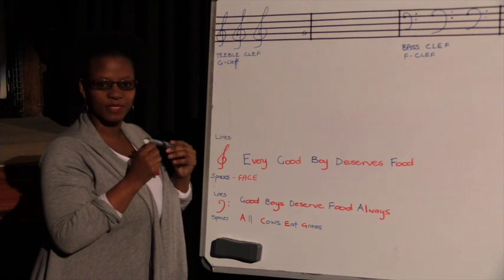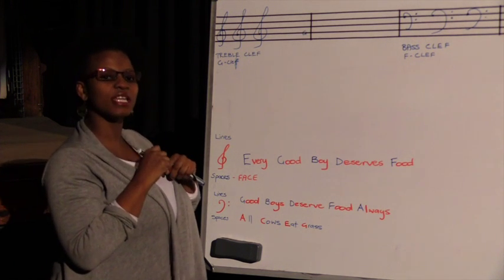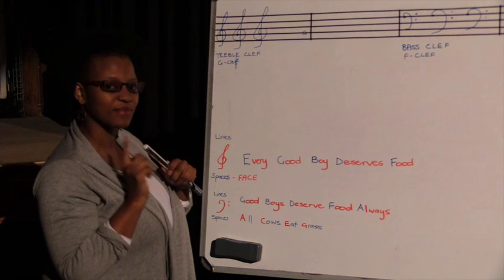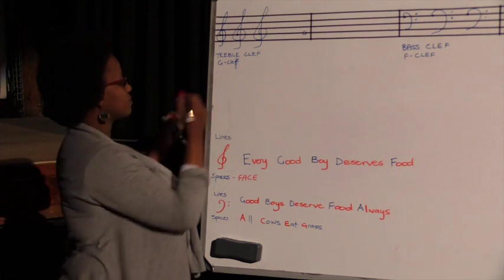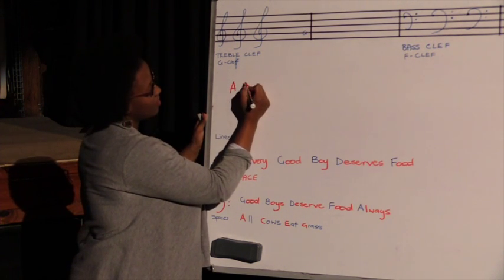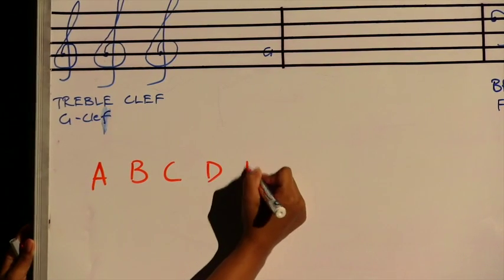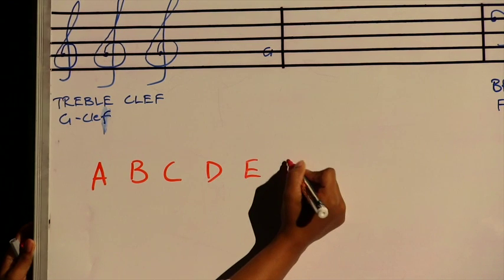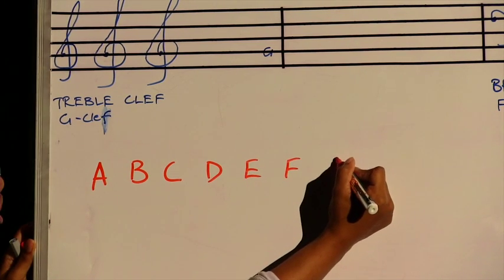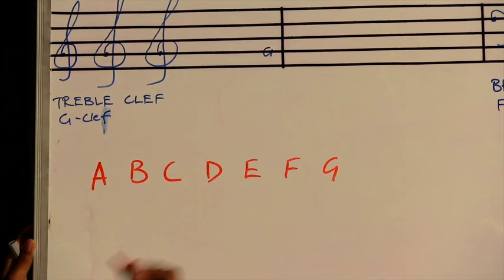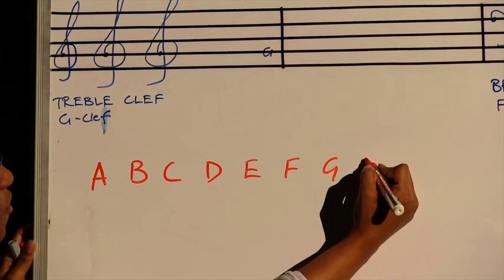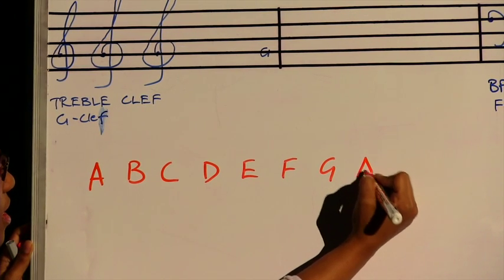Now with the letter names, we have only seven letter names in music, from A then B, C, D, E, F, G. Then we are going to start over again for our octave on the A.